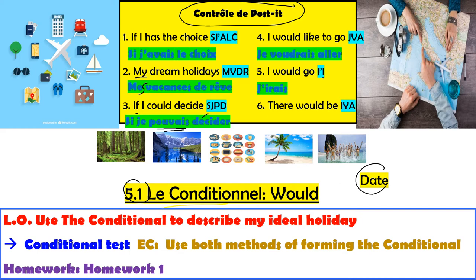Alors, et finalement — 'there would be.' We know il y a is 'there is,' il y avait is 'there was,' il y aura is 'there will be,' il y aurait — with the A-I-T ending — is 'there would be.' Give yourself a mark out of 6 for this. If you've not got a good score and you're nowhere near, you need to go back to last lesson and have a little look at this vocabulary.